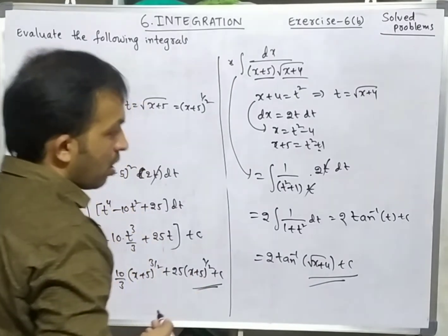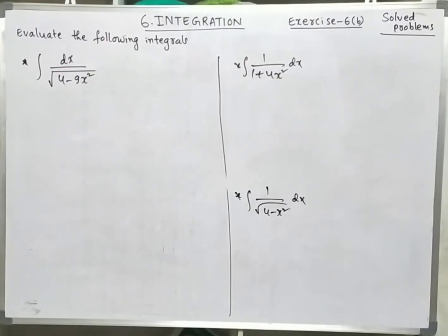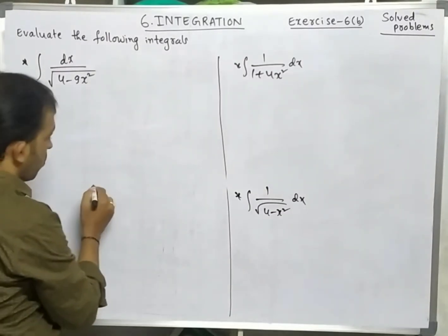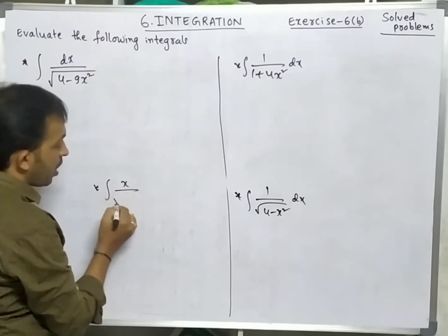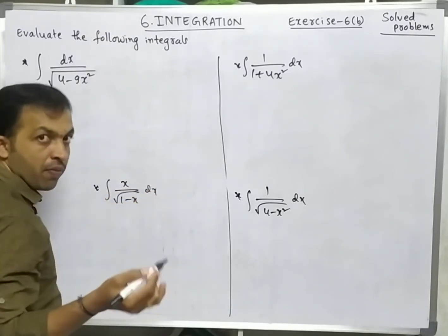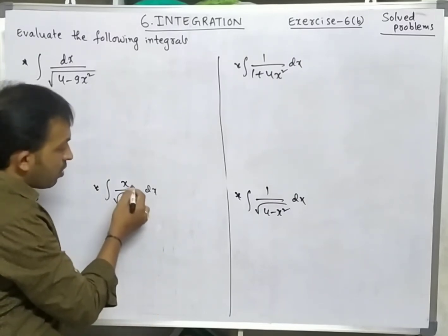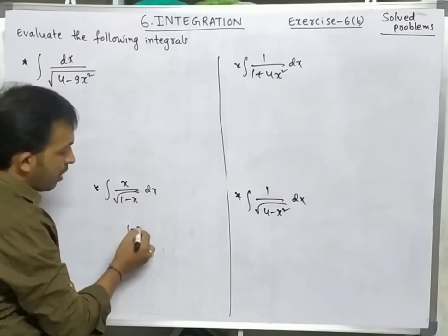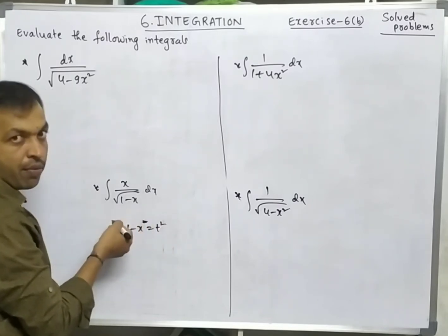This is the way of substitution when we have square root terms in the denominator. Next, you can solve integration of x/√(1-x) dx similarly by taking 1-x = t². We just saw this method — try it yourself. The textbook also explains this with trigonometric substitution — please go through that method too.